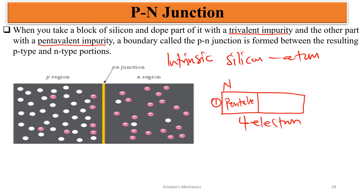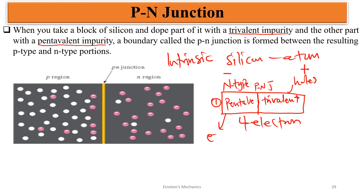If I dope the first part with the pentavalent, we are going to get an N-type semiconductor, because there are going to be more electrons. Then if I dope the other half with a trivalent impurity, we are also going to get more holes than electrons. So this becomes a negative part and this becomes a positive part for the same silicon atom. For the same silicon atom, if half of it is negative and half of it is positive, meaning there is going to be a junction — a meeting point for both the positive and the negative. This junction is what we are calling the positive and negative junction. The P represents the positive, the N represents the negative junction.